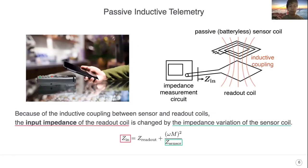Because of the inductive coupling between the two coils, the input impedance of the readout coil is changed by the impedance variation of the sensor coil. So, the impedance measurement circuit can detect the sensor value wirelessly.